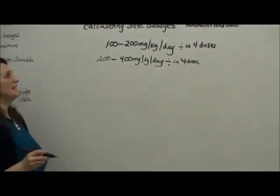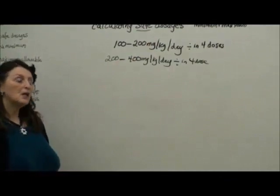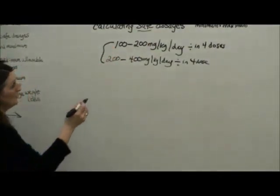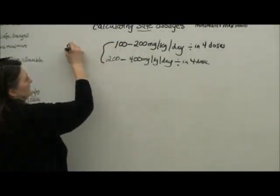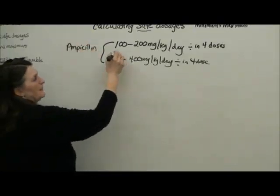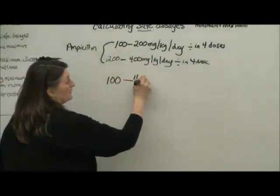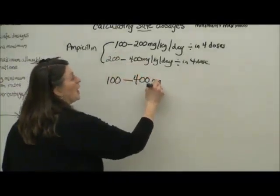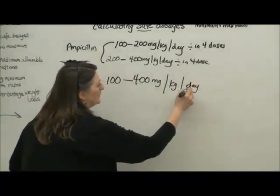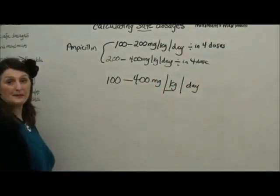So when you are calculating the safe dose for your patient, you need to look at the possible range, in which case this is for ampicillin. And the references say my patient can have 100 up to 400 milligrams per kilo per day. So first of all, we have to figure out how much is safe based on the kilogram weight.